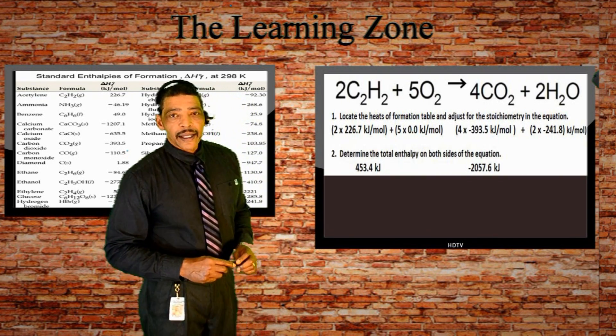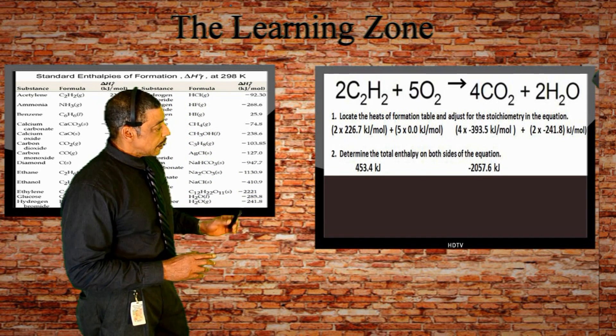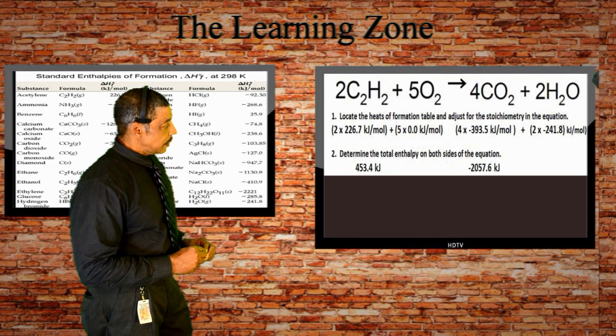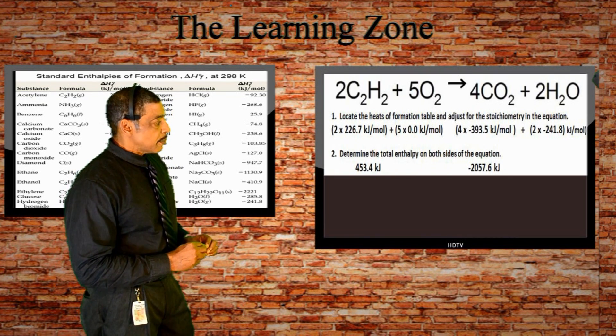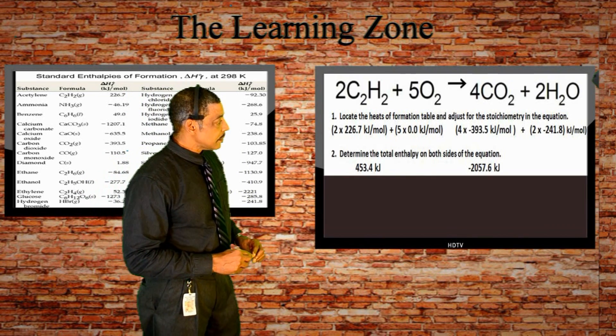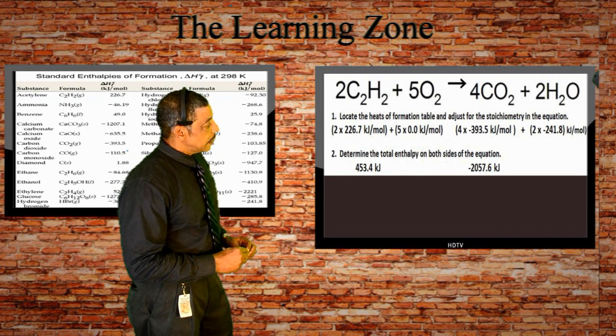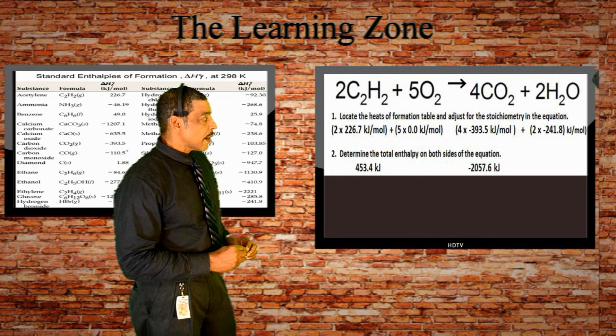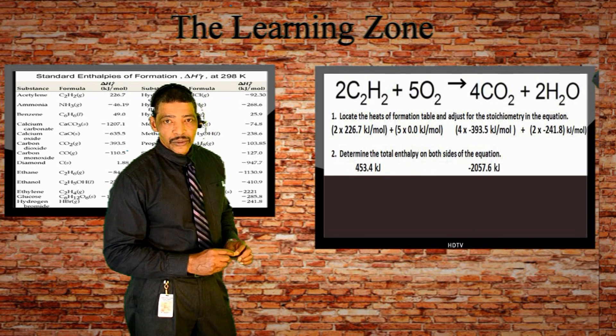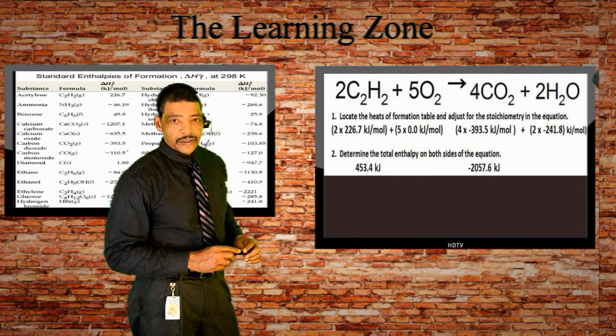Now we add the enthalpy on each side of the arrow. On the left, the enthalpy will be 453.4 kJ. Remember the moles cancel out. On the product side the sum will be negative 2057.6 kJ. Once again the moles cancel on the product side as well.